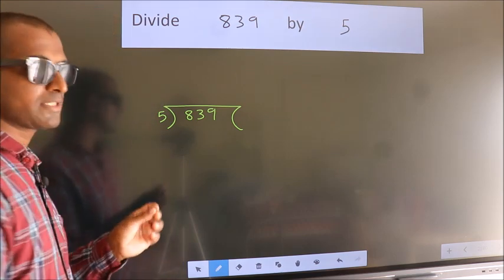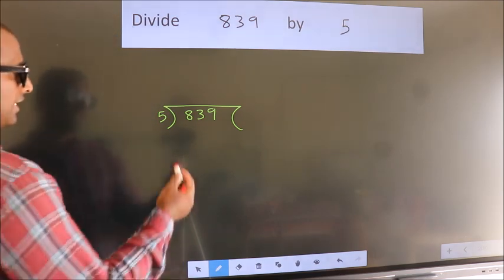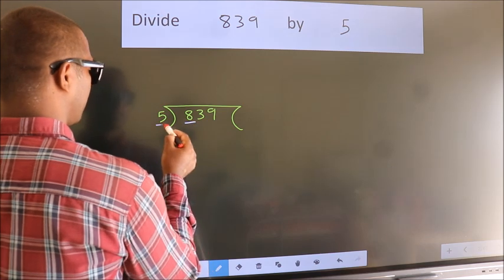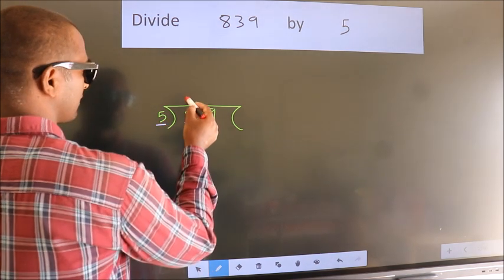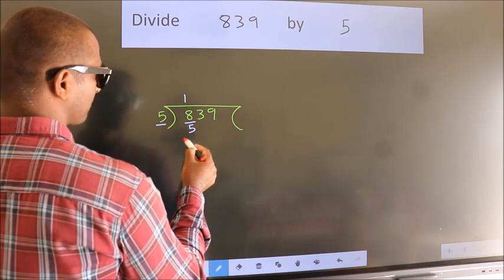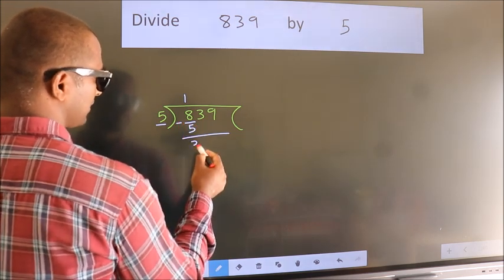This is your step 1. Next, here we have 8, and here 5. A number close to 8 in the 5 times table is 5 once, which is 5. Now we subtract and get 3.